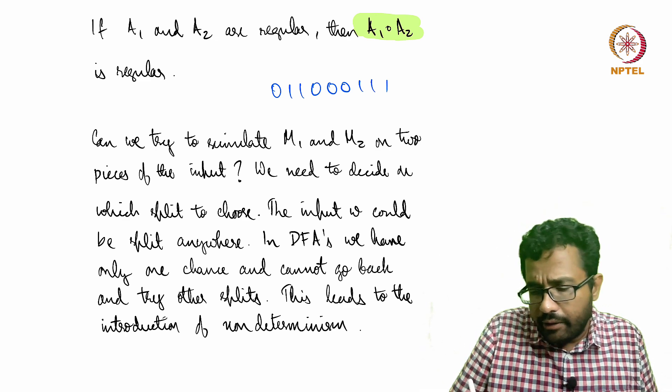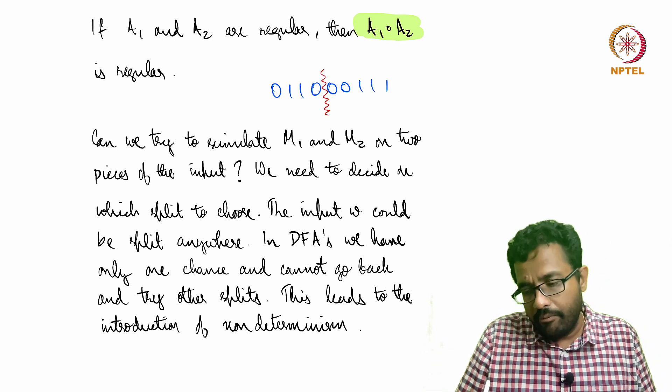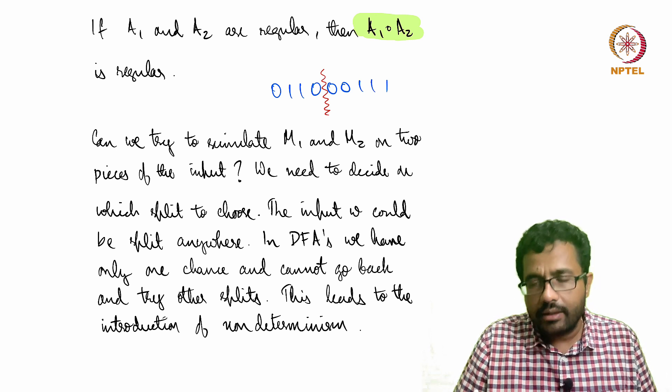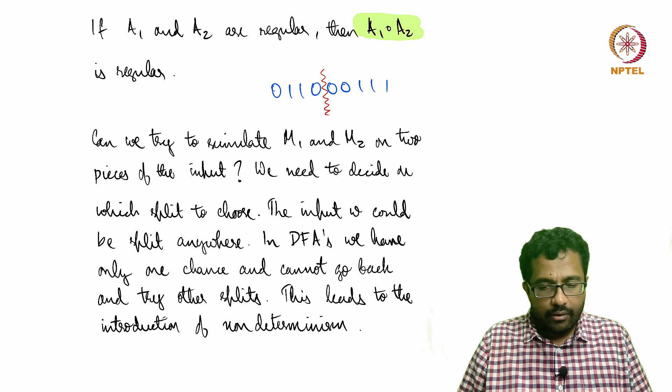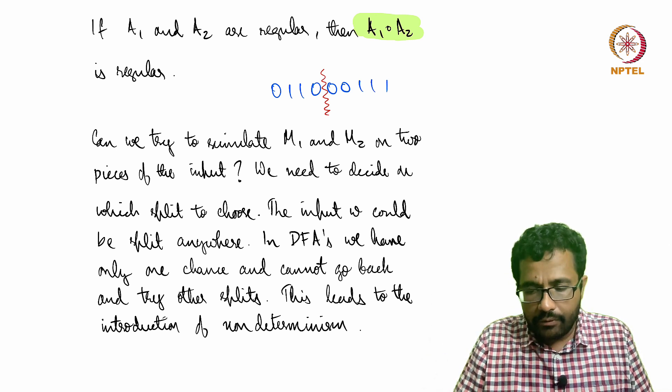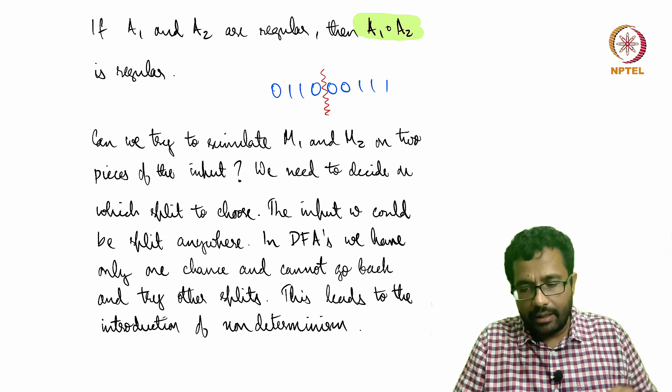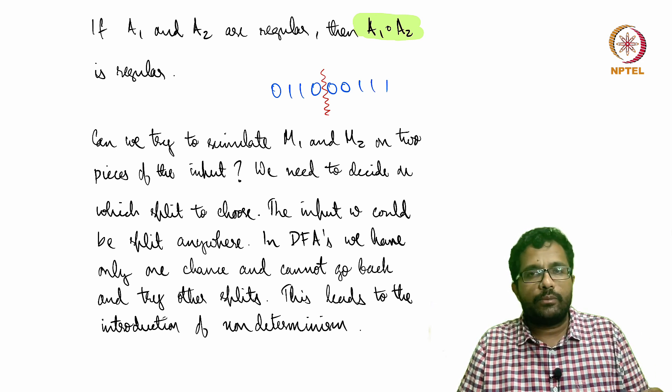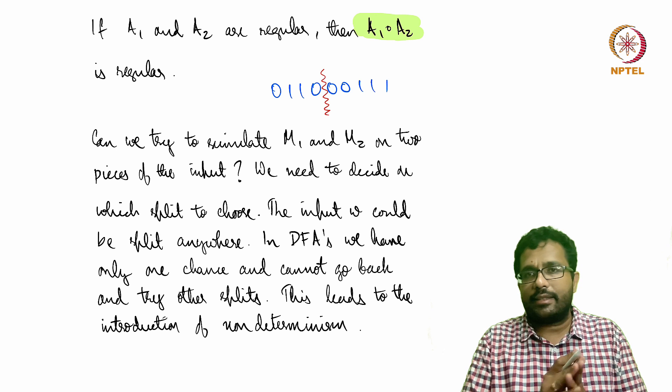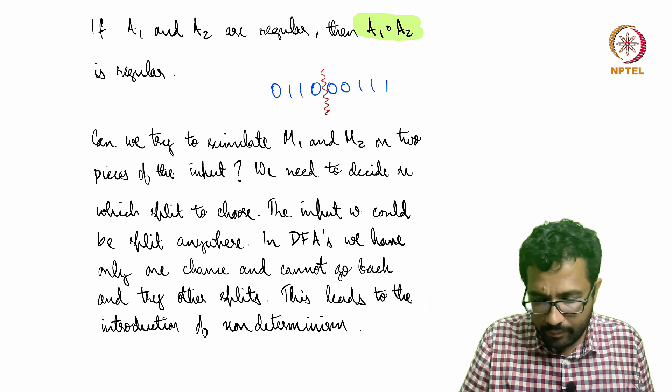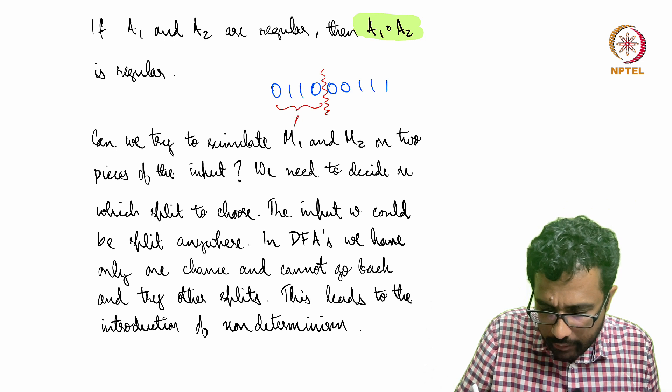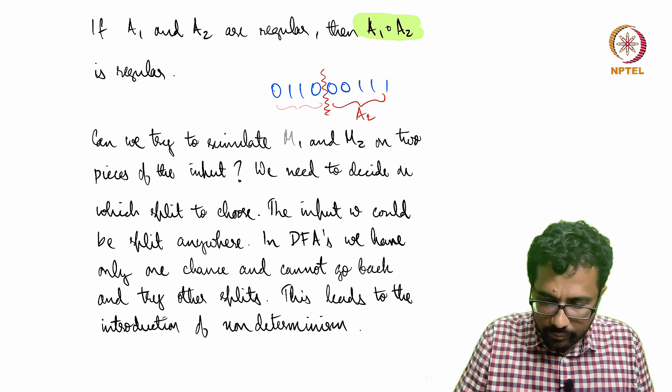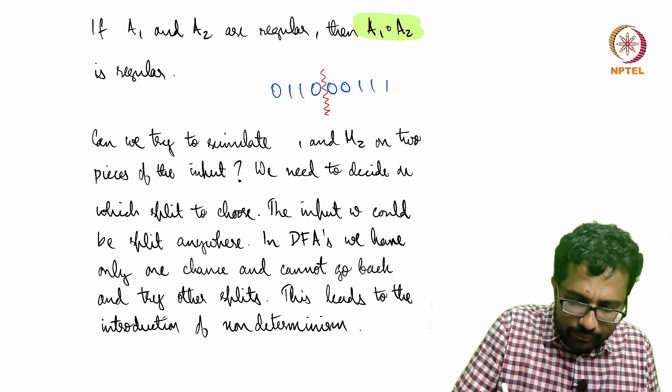We can try, for instance, maybe 01100 is part of A1 and 00111 is part of A2. We verify that 0110 is part of A1 by M1—we just check whether 0110 is accepted by M1 and 00111 is accepted by M2. And if both of them accept, then we accept. This is a concatenation—this part is from A1 and the second part belongs to A2, and then we accept.